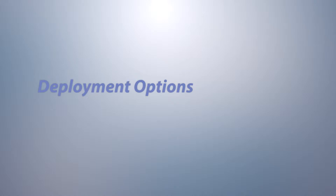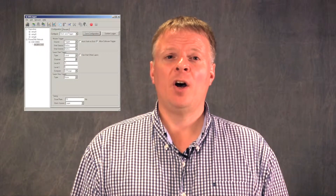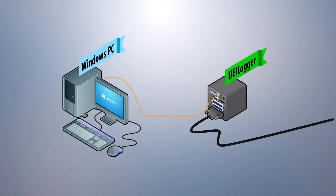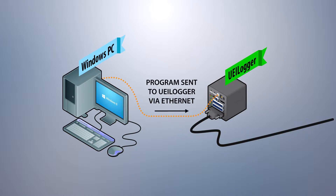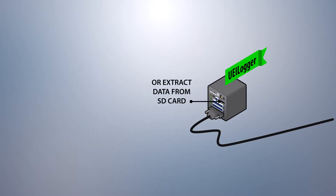Applications that require simple data logging are easily accomplished with our UEI Logger without requiring a host PC. This configuration provides one of the most compact, rugged, and high-performance data loggers available anywhere. You create your application on a high-level intuitive GUI tool, which we provide for Windows platforms. Once your logging application is created, you download it to the UEI Logger, disconnect it from your host PC, and are free to place it where you need it. After the data is acquired, you either reconnect your host PC via Ethernet, or simply remove the SD card and read the data directly.